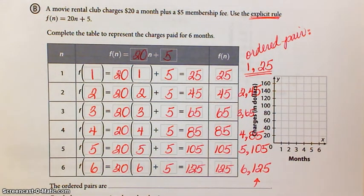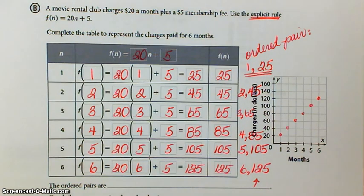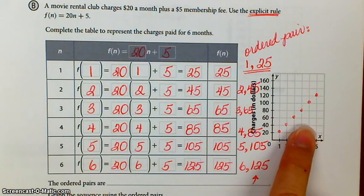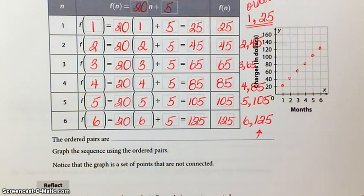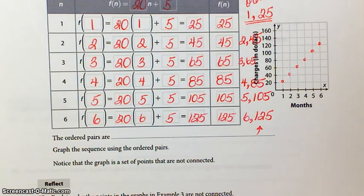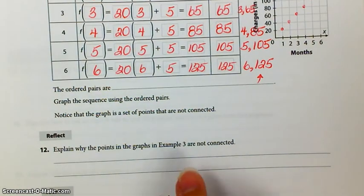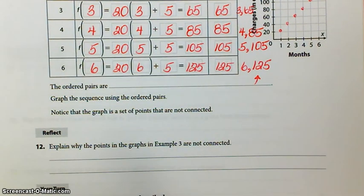So you're graphing the sequence and notice that the graph is a set of points that are not going to be connected because we're charging by the month and we are not connecting the points in the sequence. All right, so there's the graph that you should get. And again, the points are not connected because we're going to bill by the month and that's going to represent whole numbers so we're not going to connect and we're not going to have parts of a month, for instance, okay?